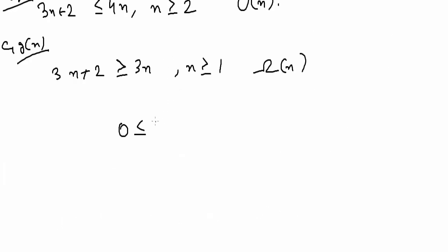So finally, we can write this: 0 is less than or equal to 3n, and this is less than or equal to 3n plus 2, and this is less than or equal to 4n for all values of n that must be greater than or equal to 2. We will take the intersection of these two. This was 1, and this starts from 2, so we will start from 2. This is our final answer.